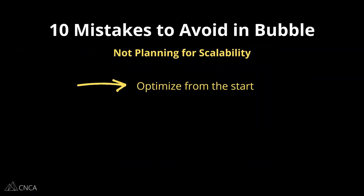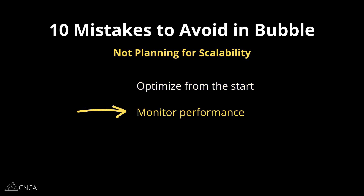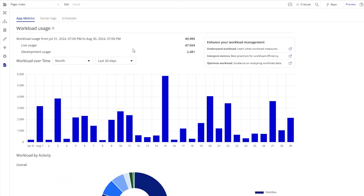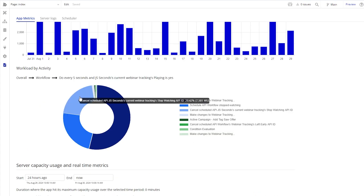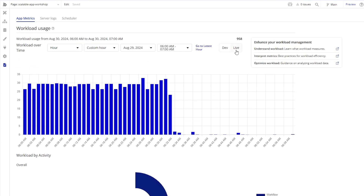The next common mistake is not planning for scalability. If you expect your app to grow, you need to make sure that your features and designs from the start are going to be able to adapt to that growth and that you'll be able to maintain it behind the scenes. The last thing you want to do is go back and rework all of your features just to support heavier usage. Optimization is a big factor in long-term scalability, and it's something you'll need to monitor at all times — you can't just set it and forget it. Use Bubble's App Metrics screen to review your workload consumption. You may see opportunities for optimization, and these may evolve over time as usage and features evolve as well.